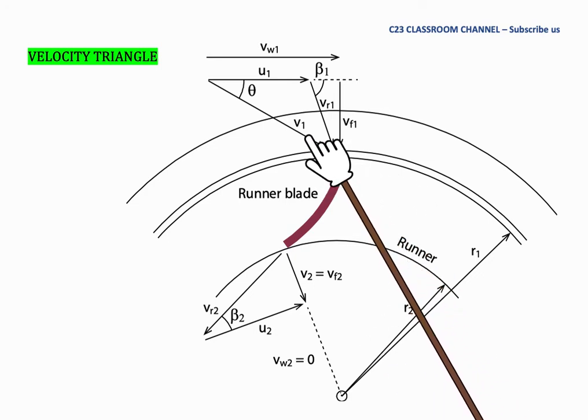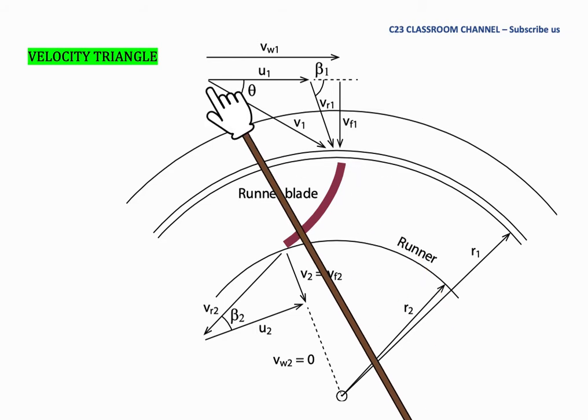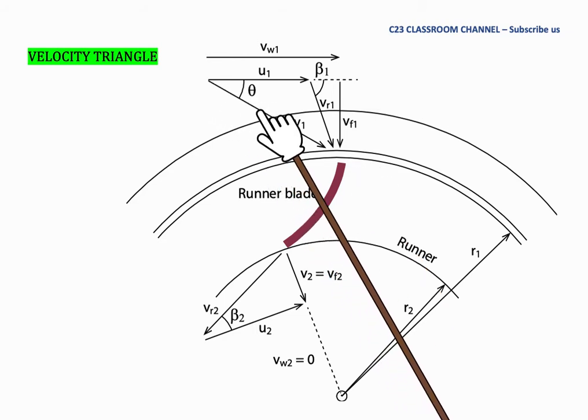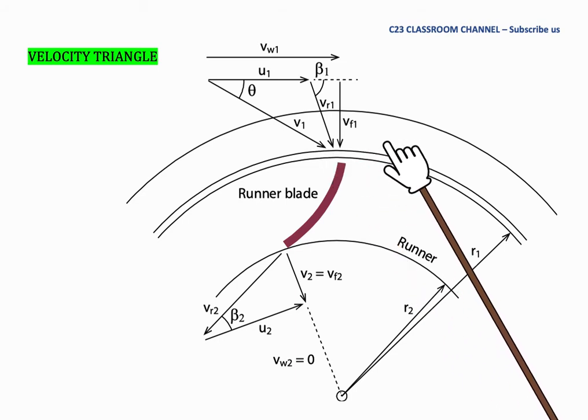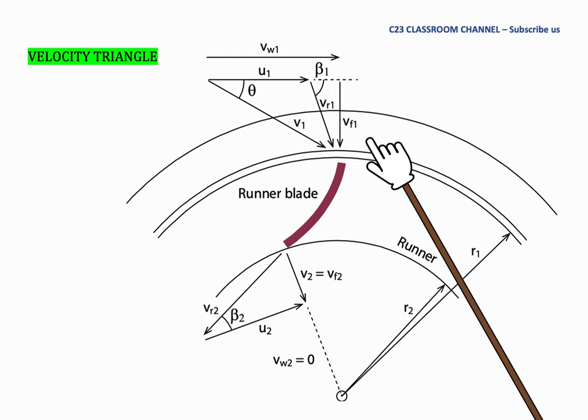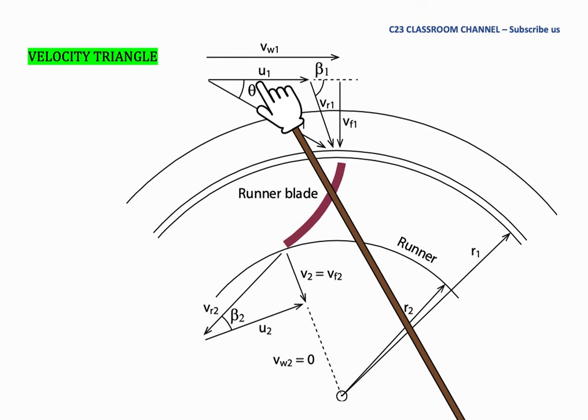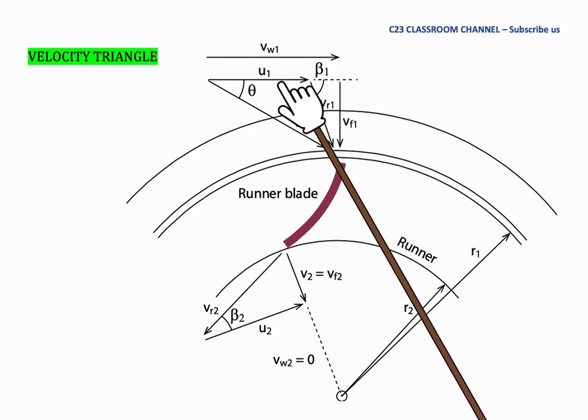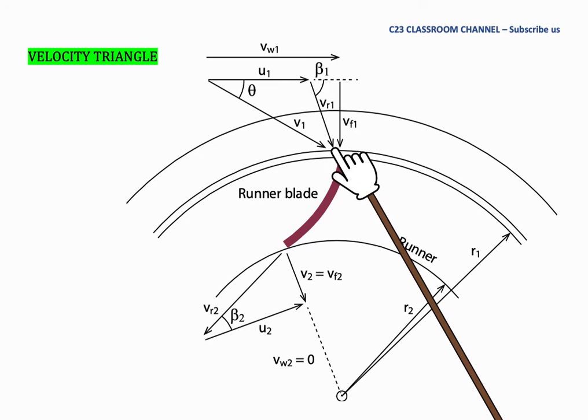So we focus on the velocity triangle at the inlet. As I said, first we draw the absolute velocity V1, then we draw the component velocity due to rotation. So we have tangential speed U1 and then we have Vr1 velocity relative to the shape of the blade.